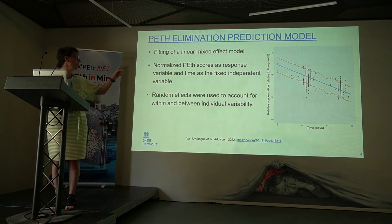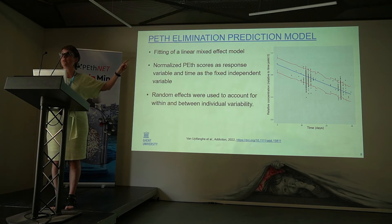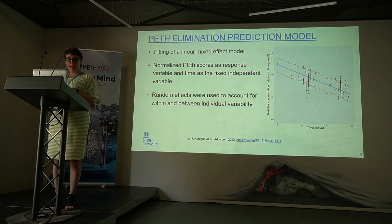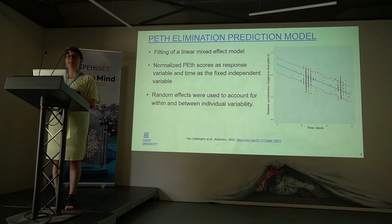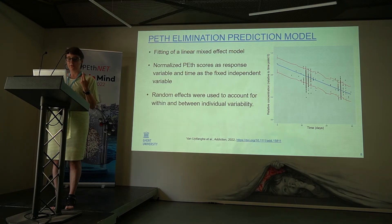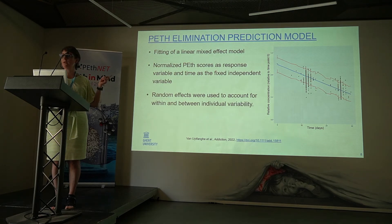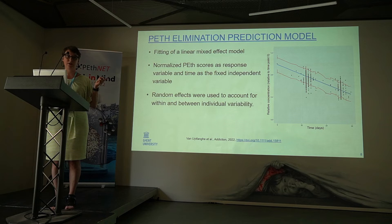If you wonder why there's only one dot in the beginning, each person's starting point was normalized to the starting point, so all people start with one — there are 600 data points beneath that one dot in the beginning. These normalized PET scores were used as a response variable and the time as the fixed independent variable. We accounted for random effects, which accounted for within and between individual variability. This graph only contains data points with a PET concentration 16O81 above 4 nanogram per liter, so it definitely takes more than four weeks to have a non-detectable PET.